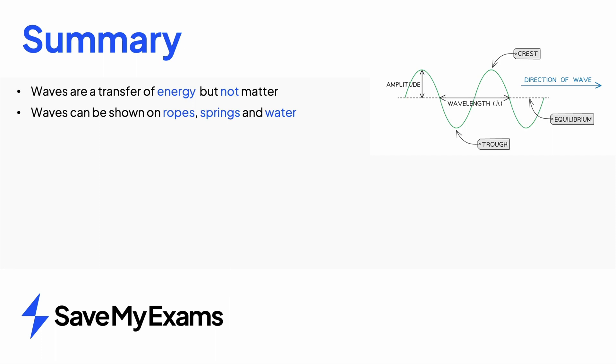Waves can be shown on ropes such as transverse waves, springs such as longitudinal waves, and water waves in a ripple tank.